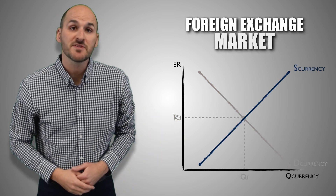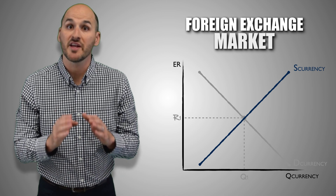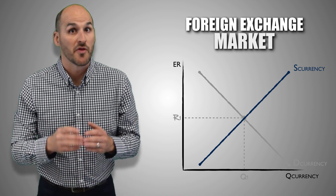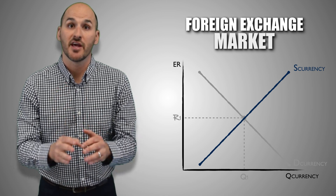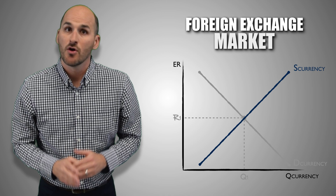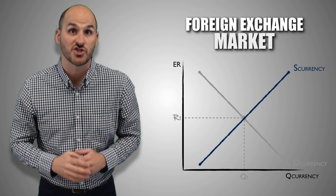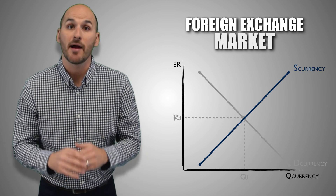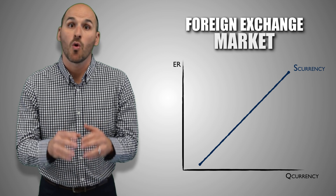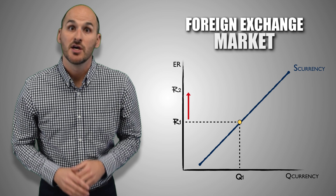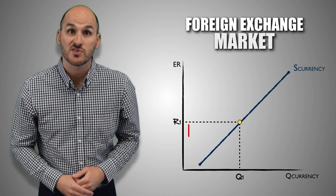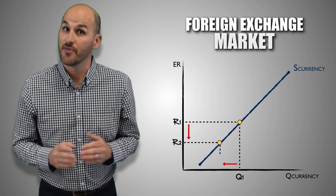The foreign exchange supply curve represents the various quantities of an international currency that all domestic and foreign sellers are willing and able to sell at various exchange rates. Anyone who holds international currency can supply that currency in the foreign exchange market — whether it be banks, individuals, or international currency speculators. Suppliers can sell that currency at the exchange rate to anyone who needs or wants it and can potentially earn profits. For example, if I'm a currency speculator and I buy Russian rubles at a very low exchange rate, I can wait until the value of the ruble rises on the foreign exchange market, and then sell my rubles for a profit. Notice that the foreign exchange supply curve is upward sloping, implying that the relationship between the exchange rate and the quantity of currency supplied is positive. As the exchange rate rises, domestic and foreign sellers are more willing or more able to sell the same quantity of a currency, and therefore sell more. As the exchange rate falls, they are less willing or less able to sell, and therefore sell less.